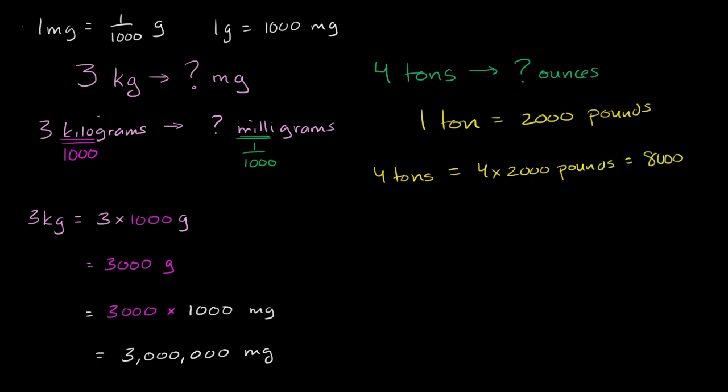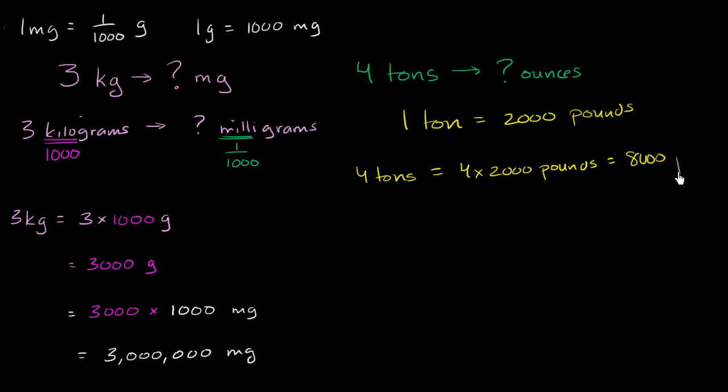8,000 pounds. Now, how many ounces are in each of those pounds? Well, we know that one pound is equal to 16 ounces.